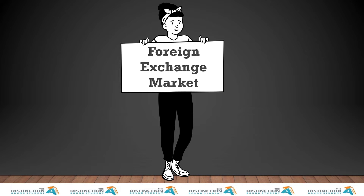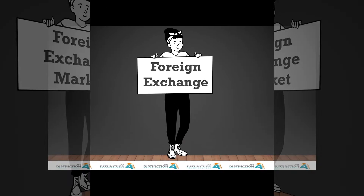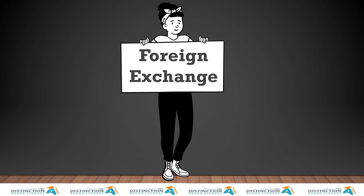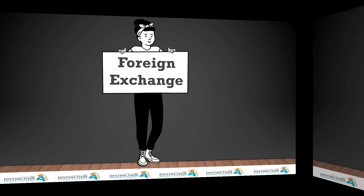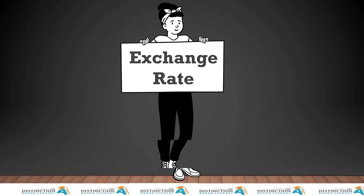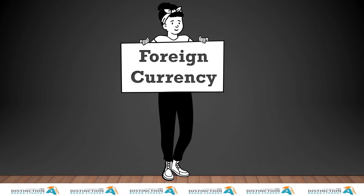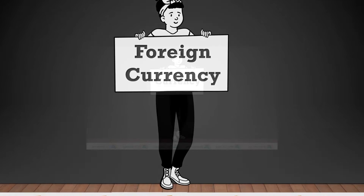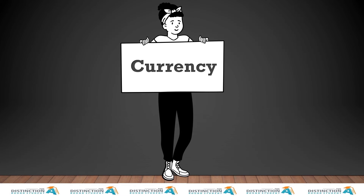A foreign exchange market is a market where one currency can be traded for another. Foreign exchange is an act of exchanging one currency for another. Exchange rate is the rate at which one currency can be exchanged for another. Foreign currency is money from a different country from yours. Currency refers to money, that which is used as a medium of exchange for goods and services.